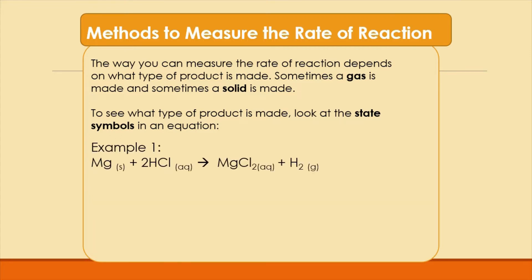In the first example, we can see that H2 is a gas as shown by the small g, which is the state symbol for a gas. In the second example, we can see that CaCO3 is produced and the small s tells us that CaCO3 is a solid. So just by using the equations, we can tell that in the first example, a gas is made and in the second example, a solid is made. And this is going to help us decide what method to use to measure the rate of reaction.